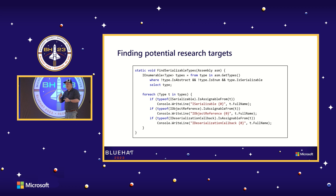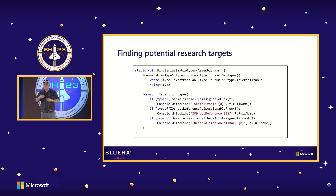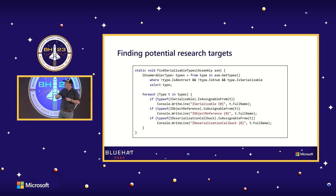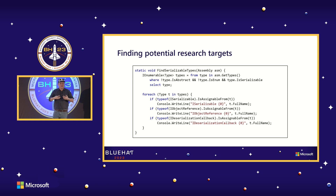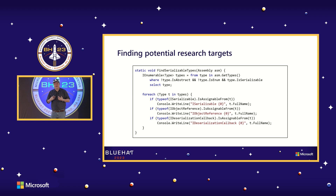It's not just serializable types which are potentially dangerous — it's the ability to have some sort of callback operating during the deserialization process. So I added extra filtering: does it implement ISerializable interface? Does it implement IObjectReference? All this code did was spit out a big list of classes which might be of interest, and then it was my hard work that had to go and actually find those interesting serialization issues.